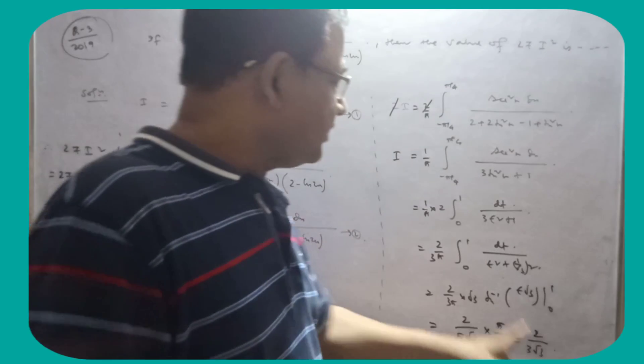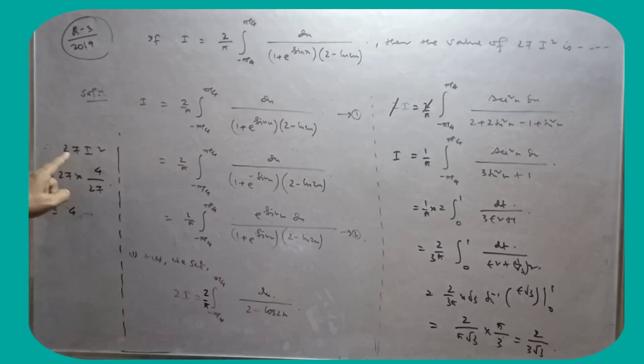Abhi, ee kya hai? That is, ee is i hai. Lekin, humko kya chahiye? 27 i square, 27 into 4 by 27. So this is 4 by 27, so that is equal to 4 hai.